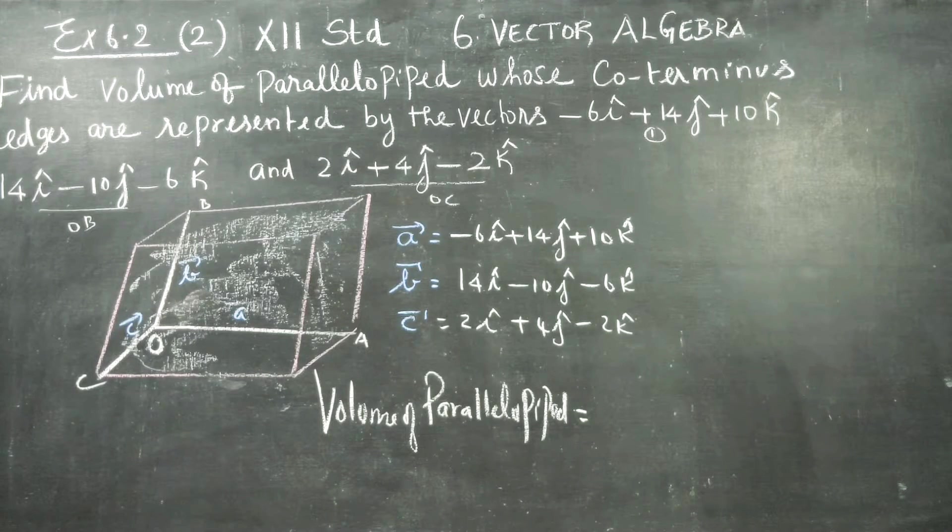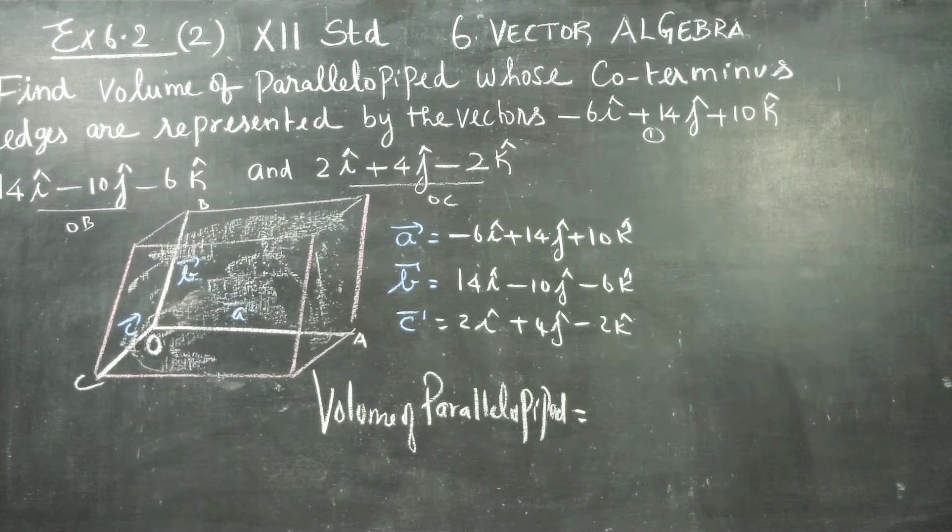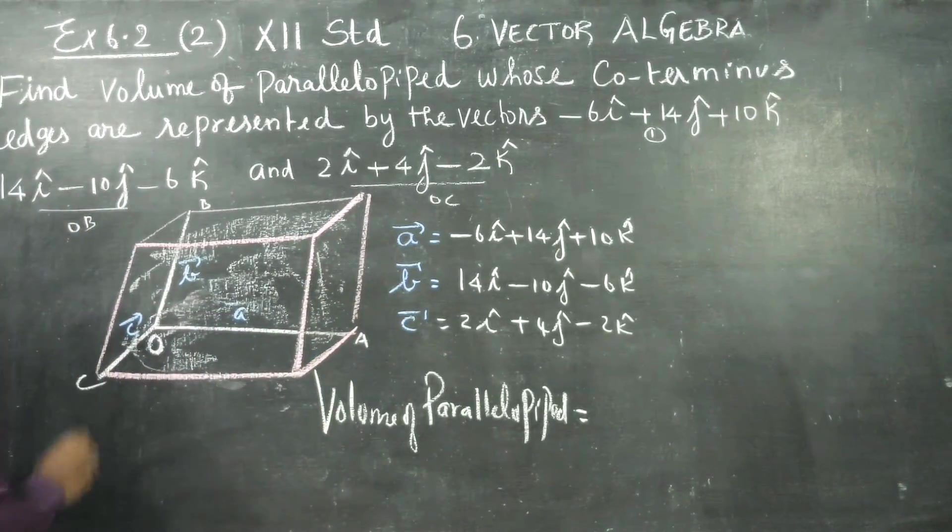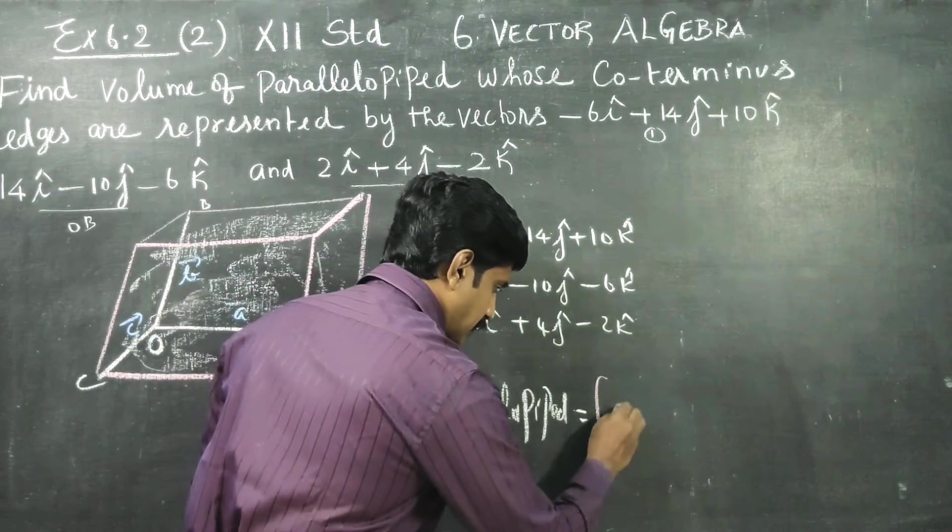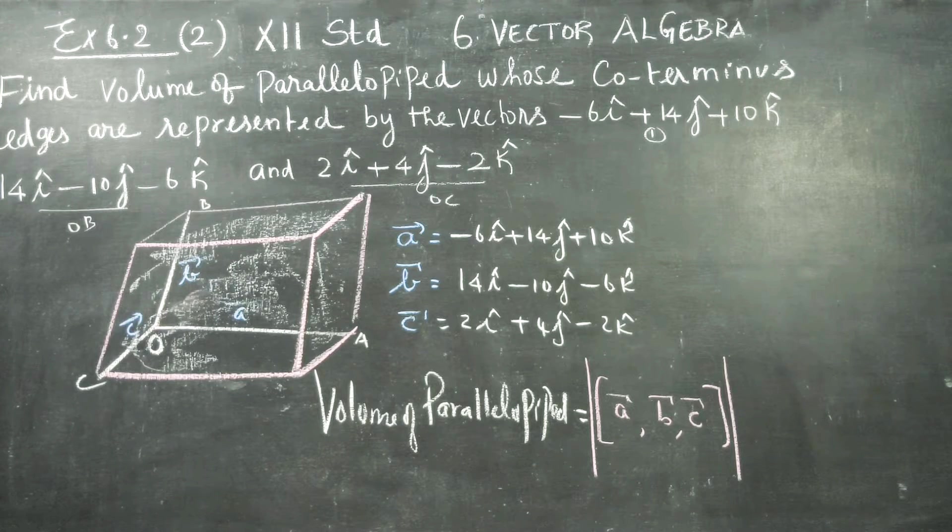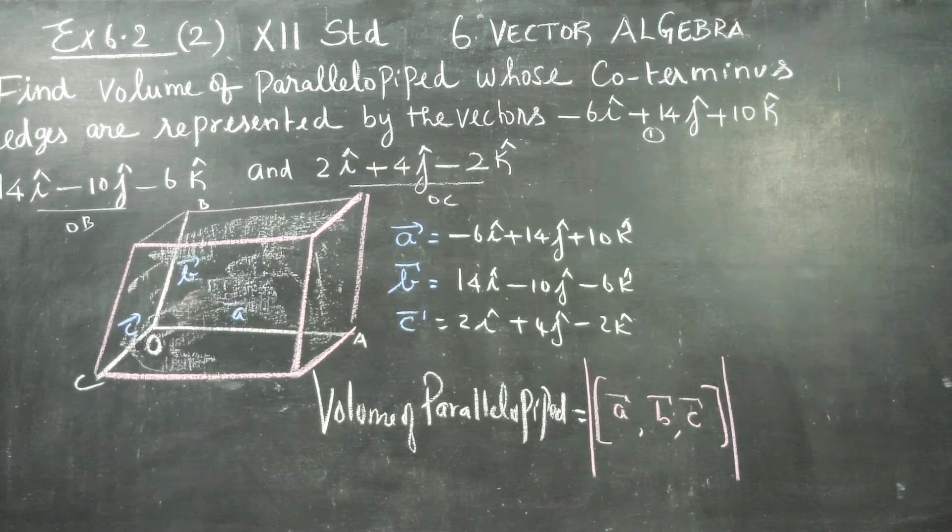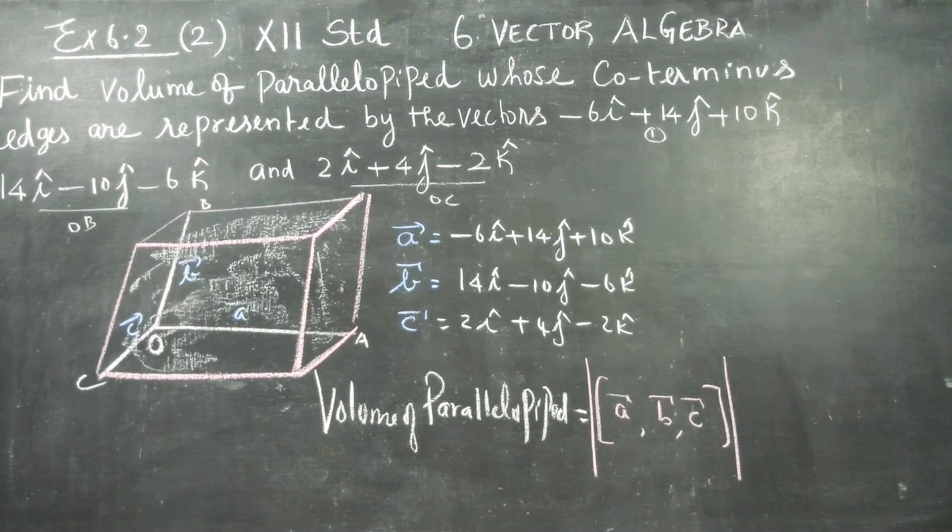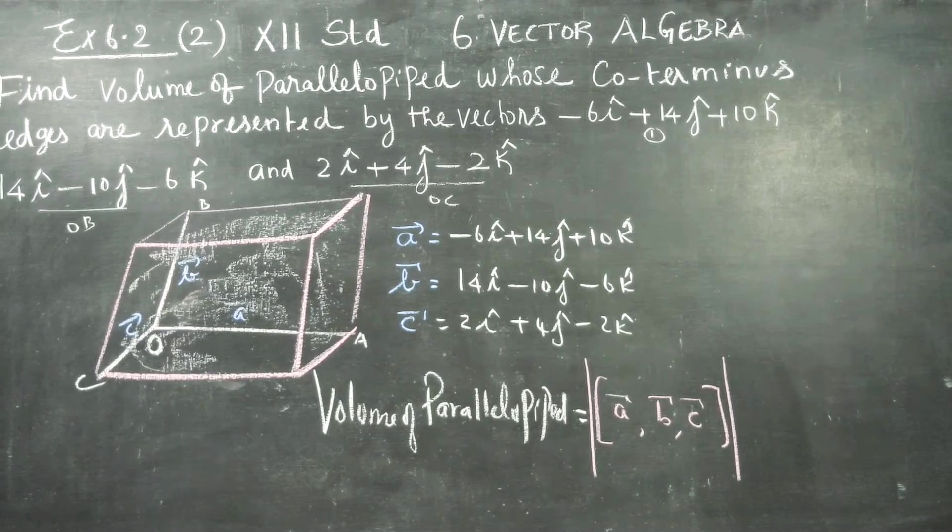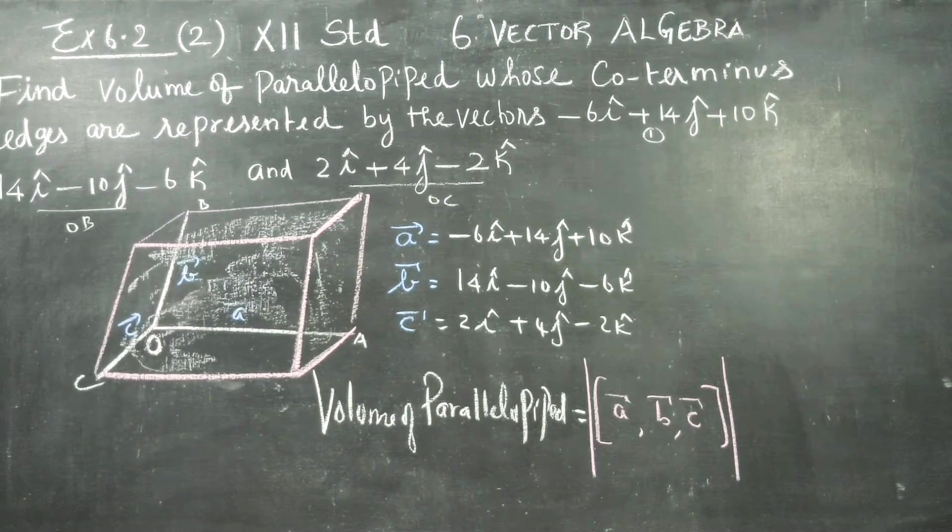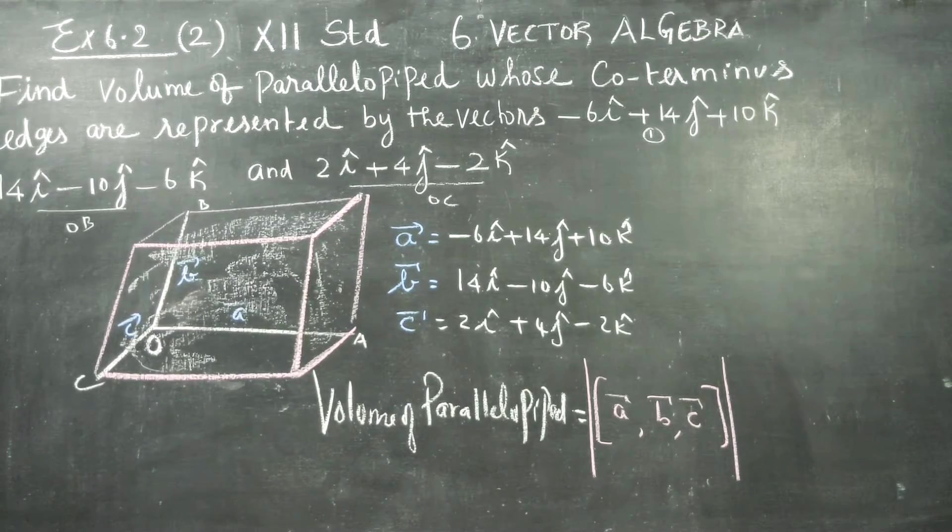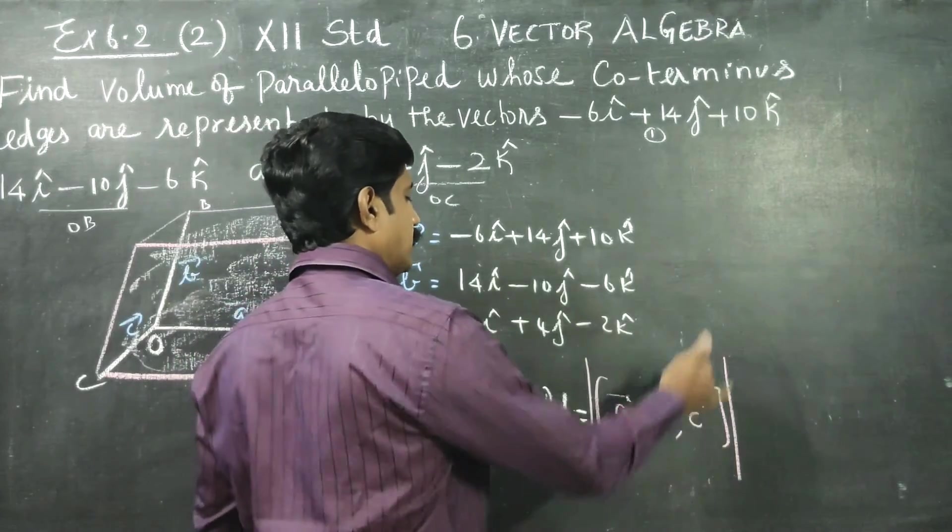Actually, the geometrical meaning of scalar triple product - what is the meaning of scalar triple product? Scalar triple product [a, b, c], its magnitude is volume of parallelepiped. In 11th standard we learned that 2 vector cross product magnitude becomes area of parallelogram. Similarly, geometrical meaning of scalar triple product is volume of parallelepiped. For volume of parallelepiped, it is enough you find the box product and find the magnitude.